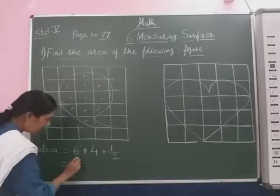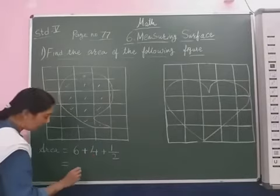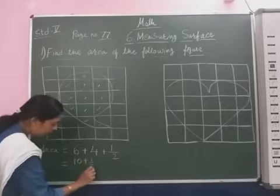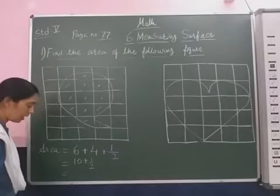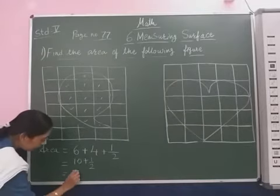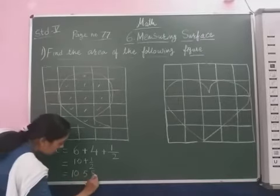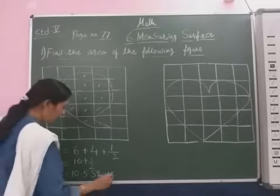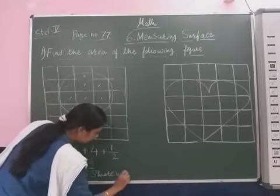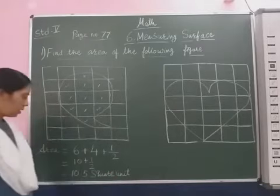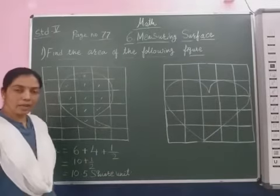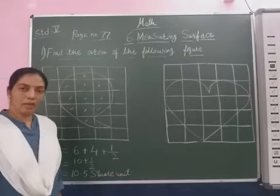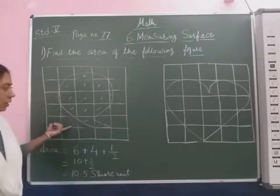Now we add this: 6 plus 4 is 10, 10 plus half. So we write as 10.5 square units. Square 10 and half. So we will write here 10.5 square units for the area of this shape.